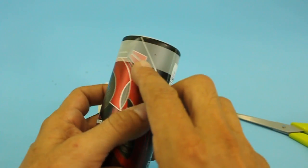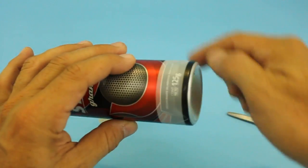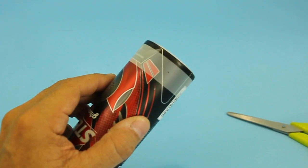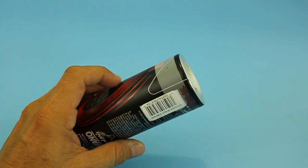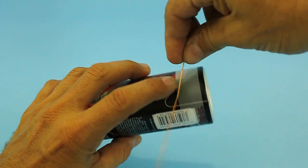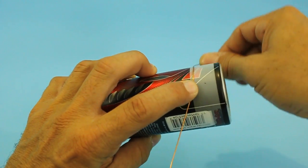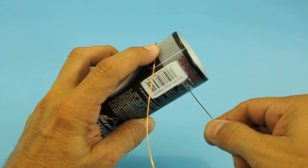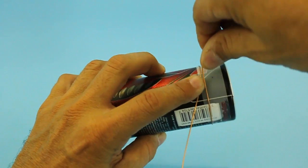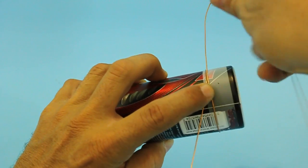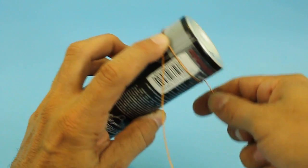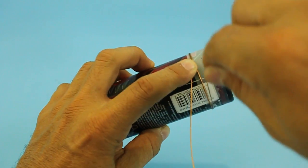And now we will wind the magnet wire around the tape. The tape will help prevent the wire from unwinding. Take your time and make sure that your coil is nice and even.